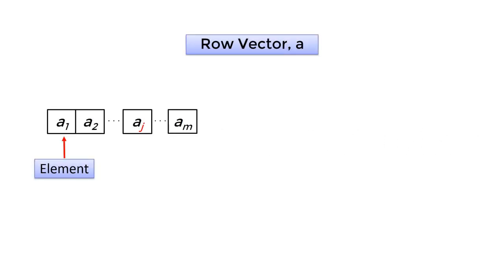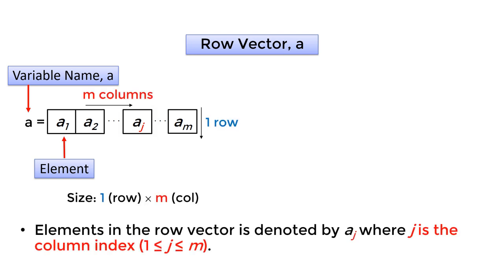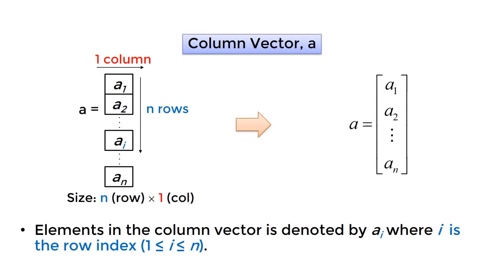A row vector is a one-dimensional array of elements in the horizontal direction. The row vector name is A, and each element is represented by A subscript j, where j is the index number from 1 to M. We call it a 1 by M vector — 1 meaning a single row, M representing the column size. A column vector is a one-dimensional array of elements in the vertical direction, with size n by 1.